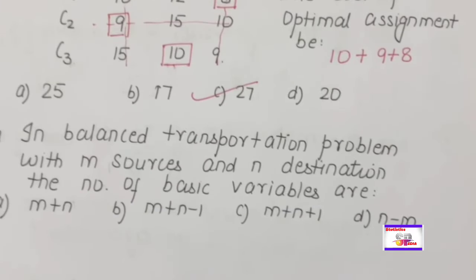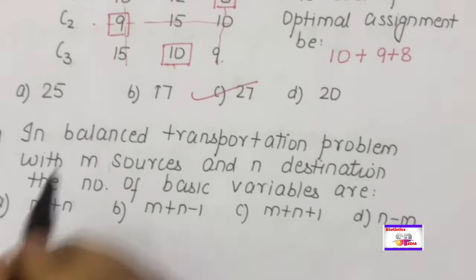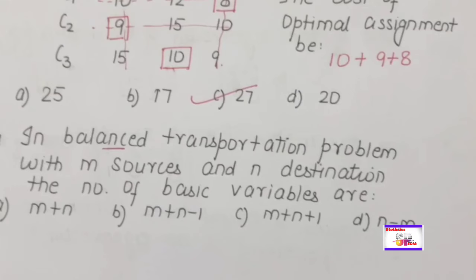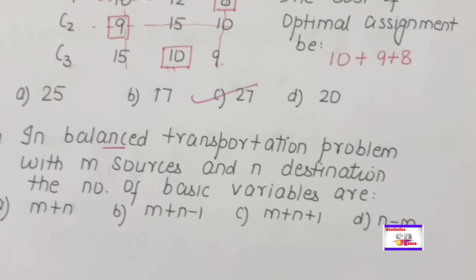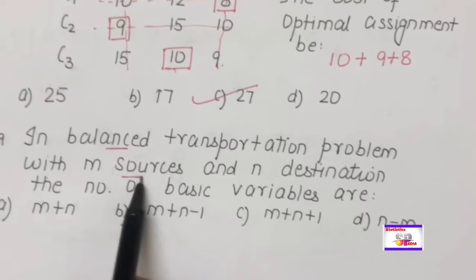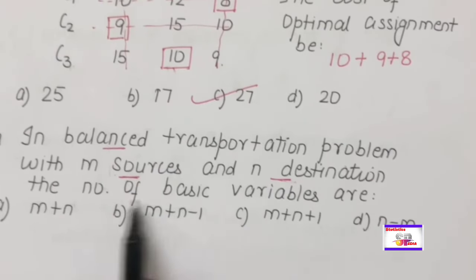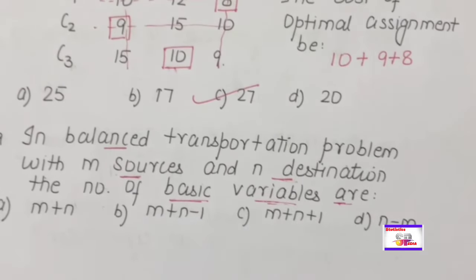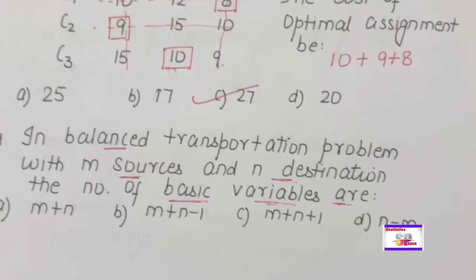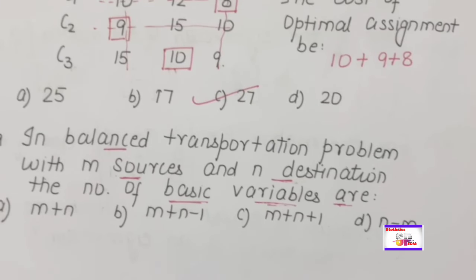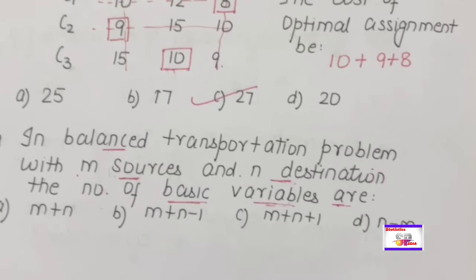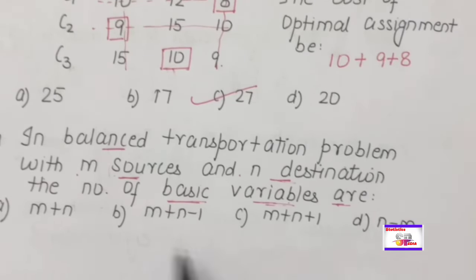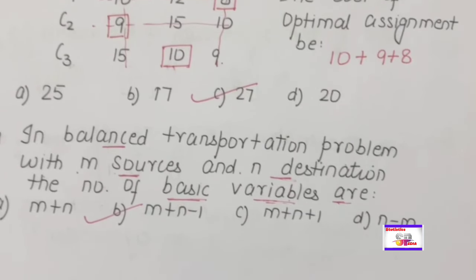In a balanced transportation problem, supply equals demand. With m sources and n destinations, the number of basic variables (basic feasible solution allocations) is m + n − 1. This is a standard formula you must remember — sometimes questions give specific values of m and n and ask for the number of basic feasible solutions.